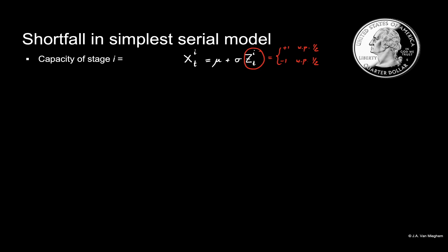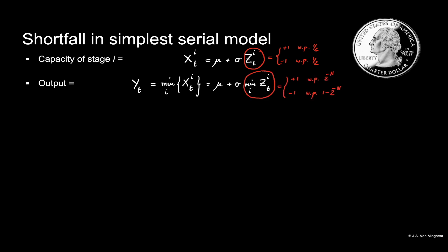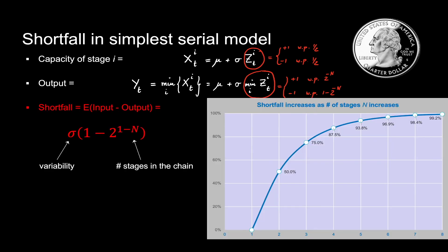To understand the shortfall, let's consider the simplest serial model. We have n stages that are all balanced, meaning their average capacity equals the mean mu. On top of that, we have some variability — it's uncertain and has magnitude sigma. The realization depends on a coin flip. In that model, the total output of the process is the minimal capacity of the n stages. Because we have these binary events, we can calculate the expected shortfall, which is sigma. This shows right away that the shortfall of the process is proportional to the magnitude of variability. The second term shows that there is an exponential impact of the number of stages in the chain — when we have six to seven stages, virtually all output is lost.